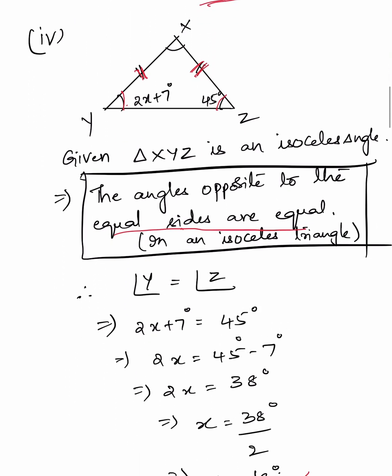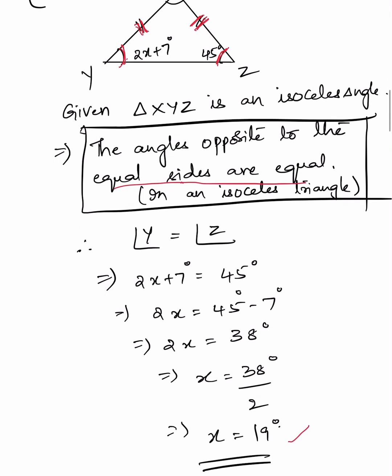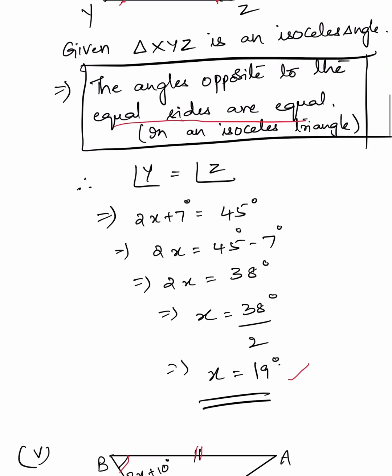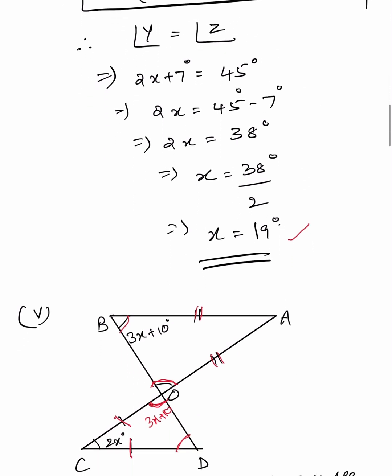Fourth part: Triangle XYZ is an isosceles triangle, meaning it has two equal sides and the angles opposite to those equal sides are also equal. Therefore angle Y equals angle Z, so 2X plus 7 equals 45. Then 2X equals 38, and X equals 38 divided by 2, giving X equal to 19 degrees.